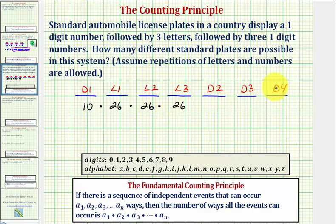Now we have three more events. We're back to selecting one-digit numbers. And again, because repetition is allowed, each of these events can occur ten ways, so times ten, times ten, times ten.